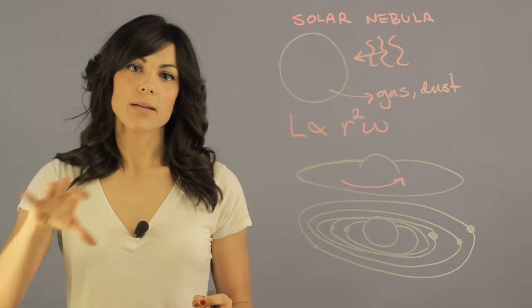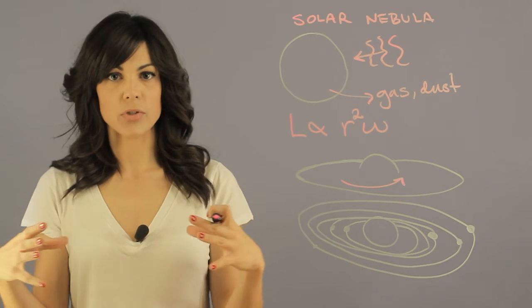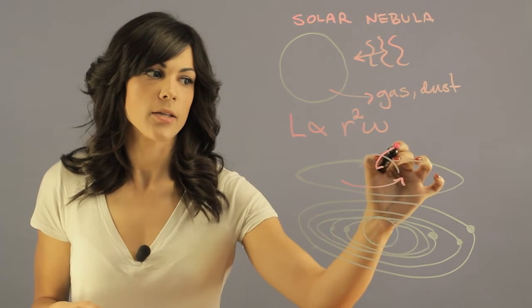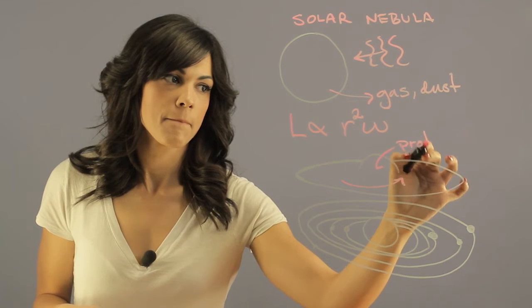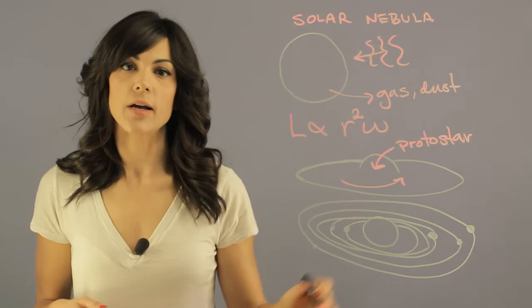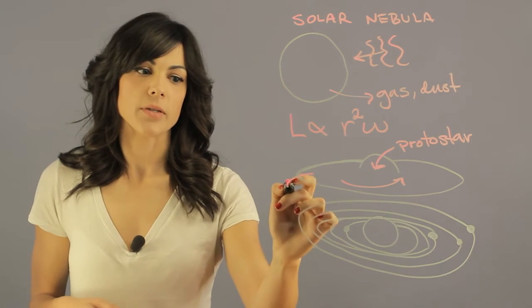And then most of the mass, because of the compression, is going to concentrate at the center, and this is generally where you get the protostar. So in our solar system, the Sun came from the protostar, and the planets came from the disk.